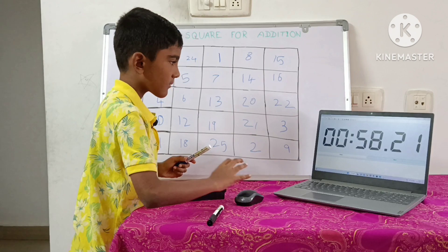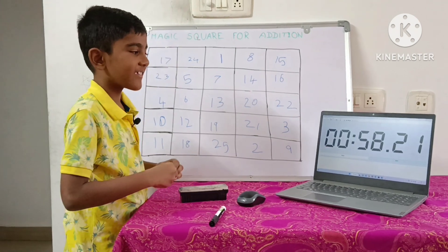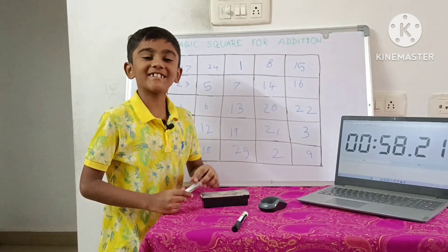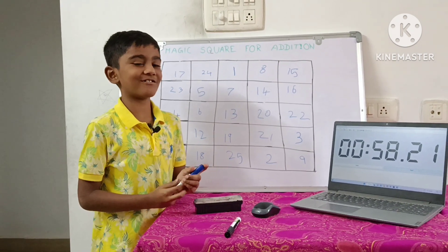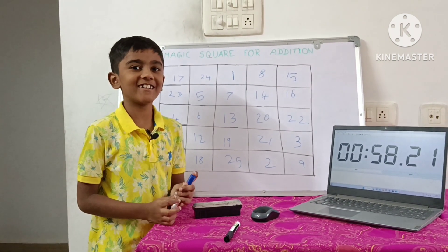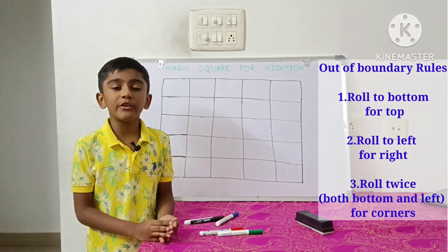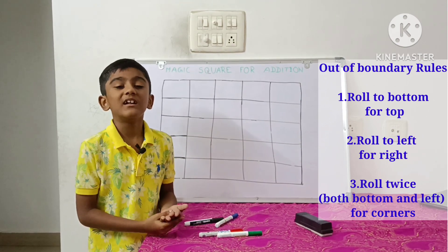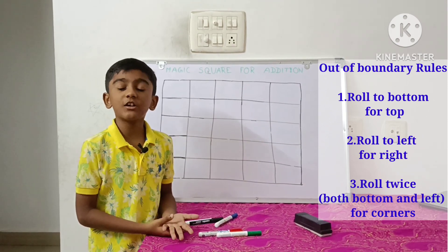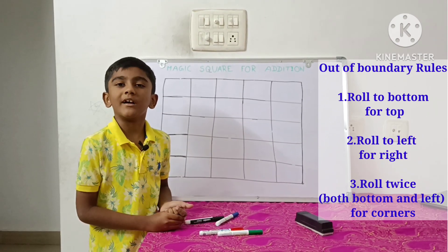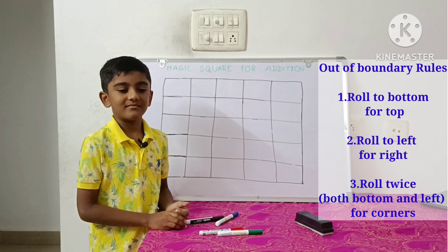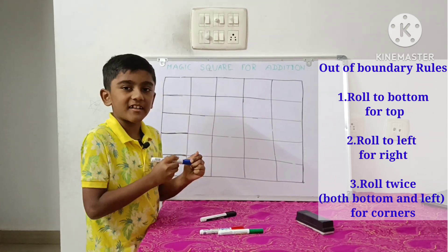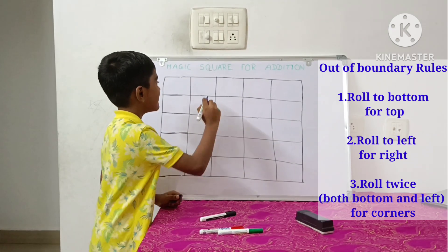In this video I am going to show you the logic to solve any odd number magic square. Today I am going to tell you how to fill a 5 cross 5 magic square. Start at the middle of the first row.